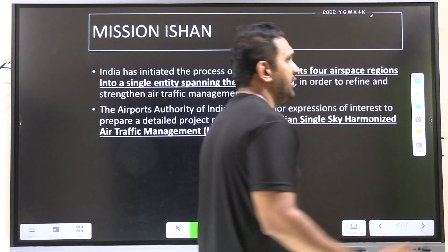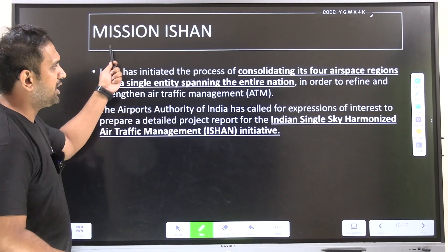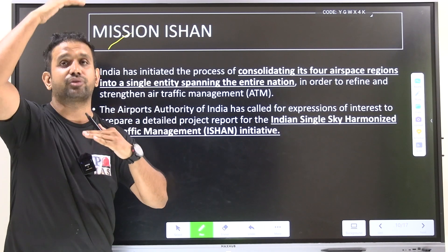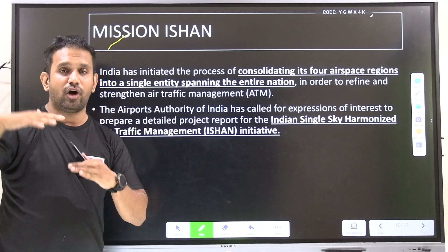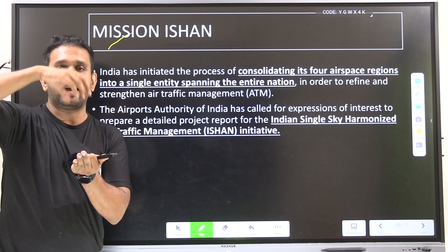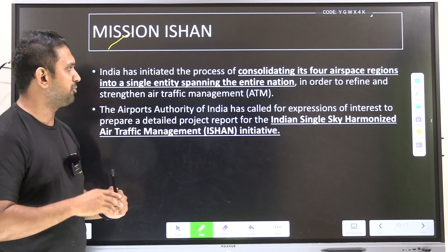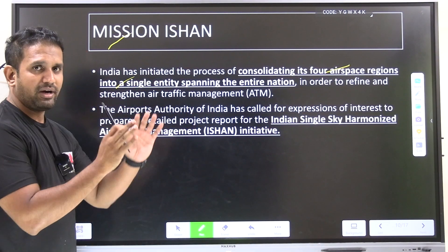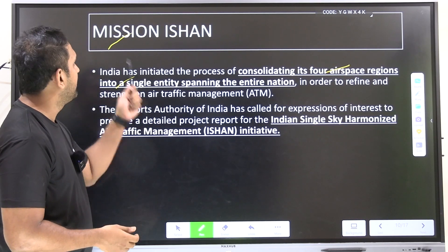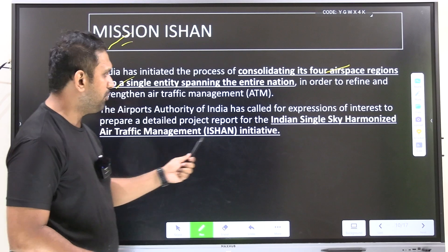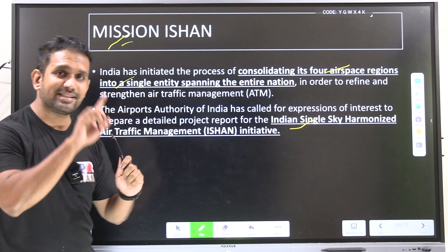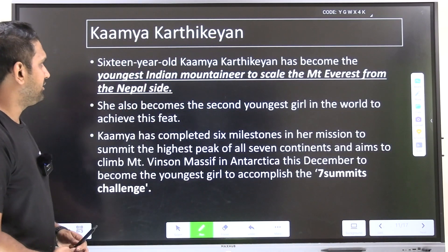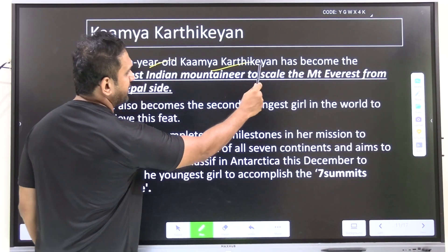Mission ISHAN: India has four airspace regions. The total sky above India's territory is called Indian airspace. Mission ISHAN aims to merge these four airspace regions into one single entity. The full form is India Single Sky Harmonized Air Traffic Management.